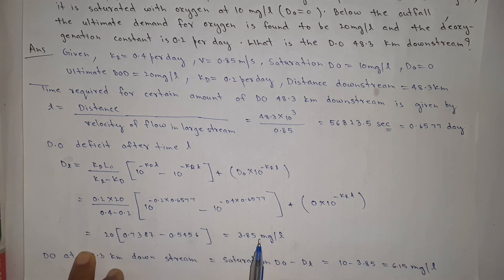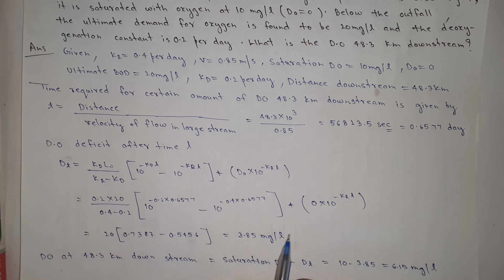This means oxygen deficit is 3.85 mg per liter. Now we have to find the dissolved oxygen at 48.3 km distance. So dissolved oxygen at 48.3 km downstream will be 10 minus 3.85 equals 6.15 mg per liter. This is the dissolved oxygen at distance 48.3 km downstream.